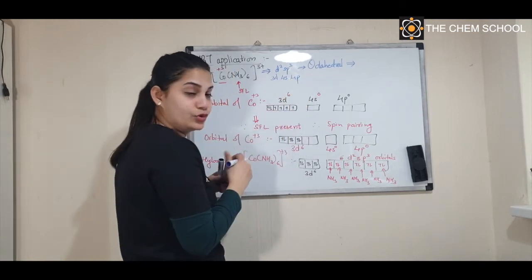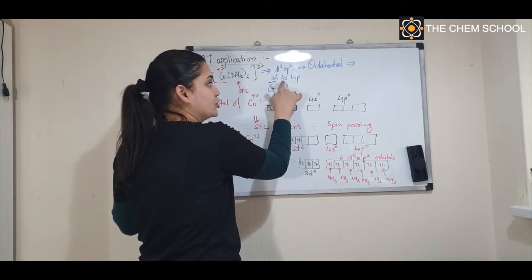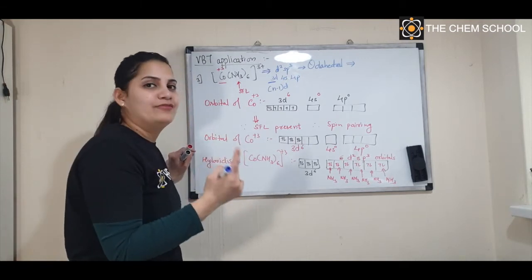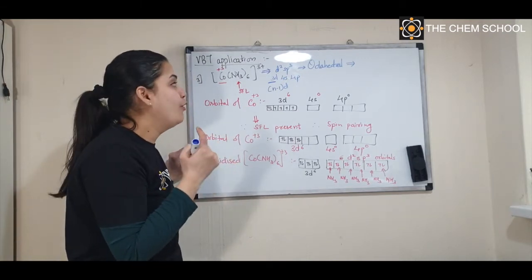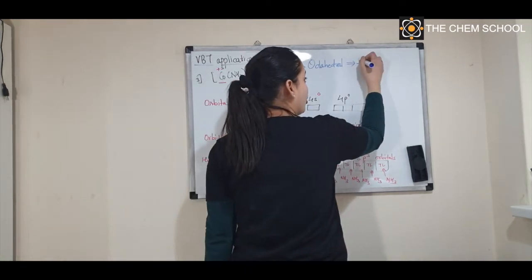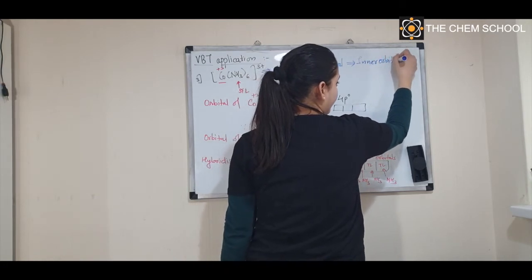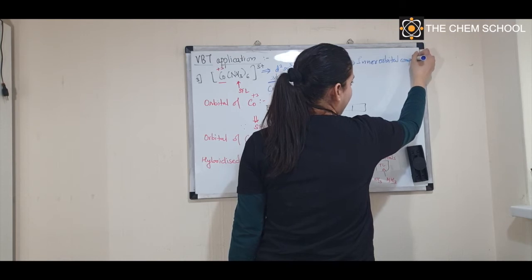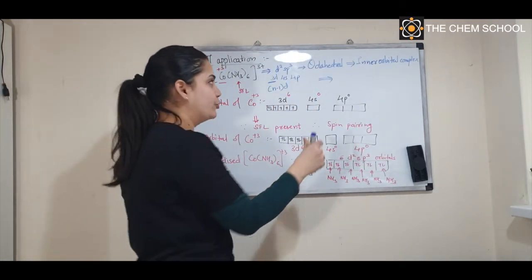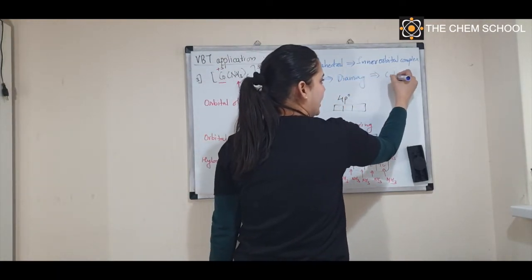Because the d orbital used is (n−1)d, this is an inner orbital complex. There are no unpaired electrons present, therefore this complex is diamagnetic and colorless.